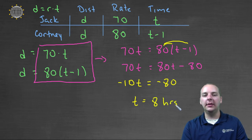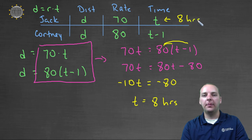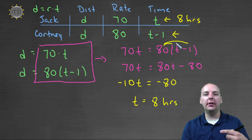And the unit is hours. So what is t? What's t representing? T represents the time that Jack was in the car. Okay, now how long was Courtney in the car? How long did it take Courtney to catch up with Jack? Well, only a total of seven hours.